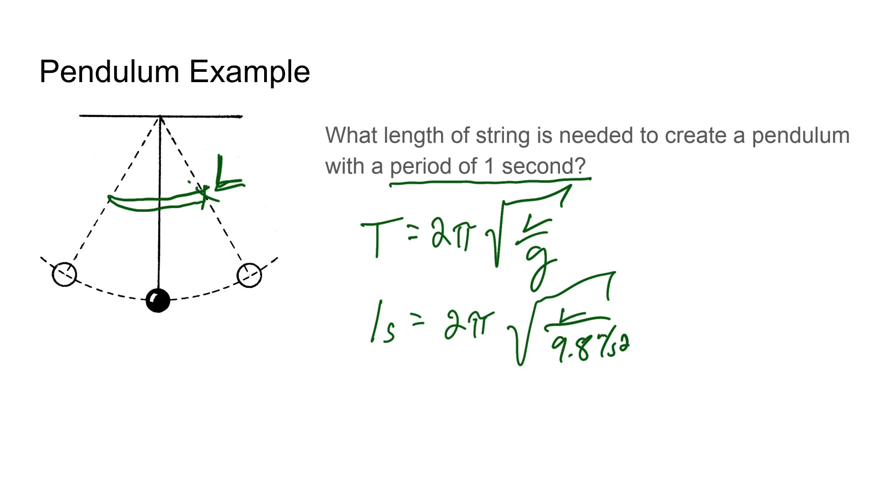And then we're just going to go ahead and solve for L. So we'll go ahead and divide by 2 pi, that equals square root of L over 9.8. Let's go ahead and square both sides. That gives us, let's write it like this, 1 over 4 pi squared equals L over 9.8. And then we'll just multiply by 9.8, so L equals 9.8 divided by 4 pi squared. Go ahead and plug that in and we get approximately 25 centimeters or 0.25 meters.